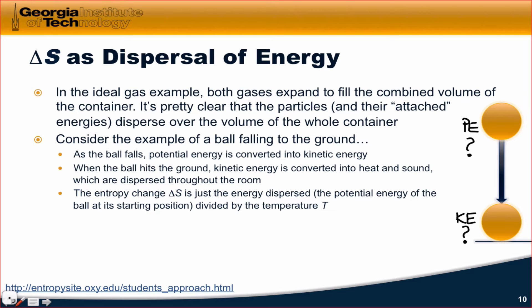According to the first law, energy is conserved, and so the energy of the ball falling to the ground must have gone somewhere. Well, what we know is that the energy is converted into heat and sound when the ball comes to rest. And that heat energy, that thermal energy, and the sound are dispersed throughout the room in which the ball is sitting. The entropy change for this process is just the energy dispersed, for example, the positive potential energy, divided by the temperature T at which this process is occurring. This is how we think of entropy change. It's the amount of energy dispersed that has units of energy divided by the temperature at which the dispersal is occurring, T.